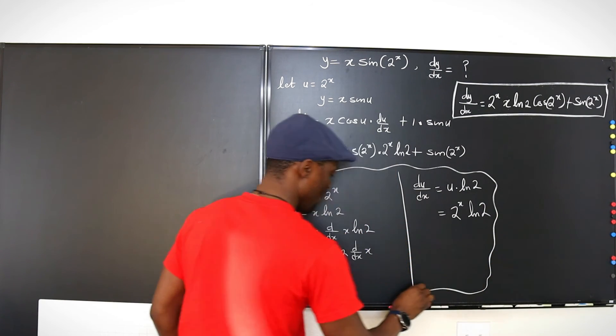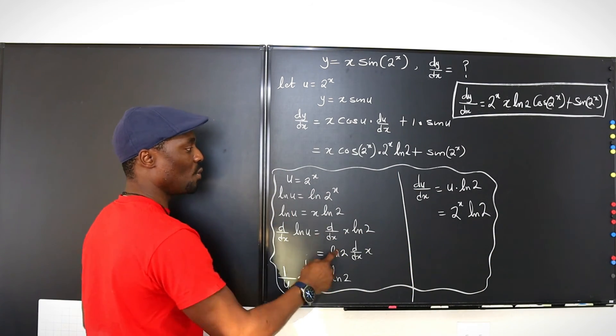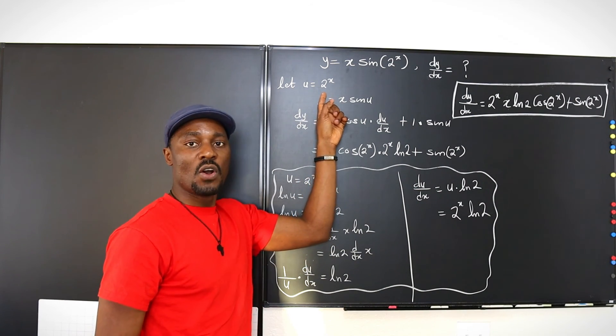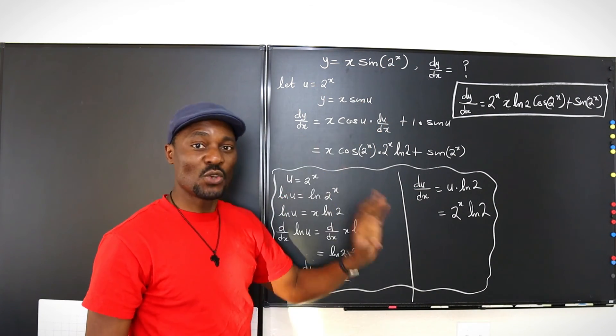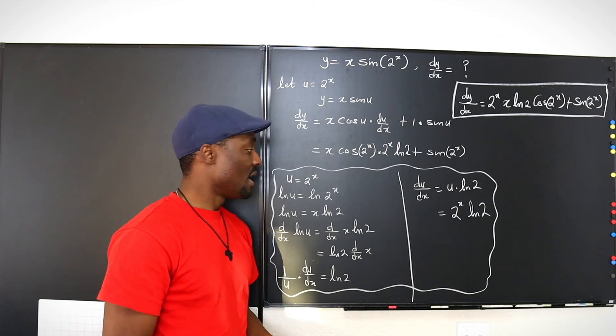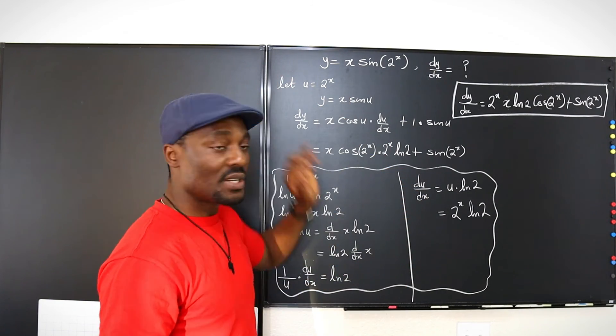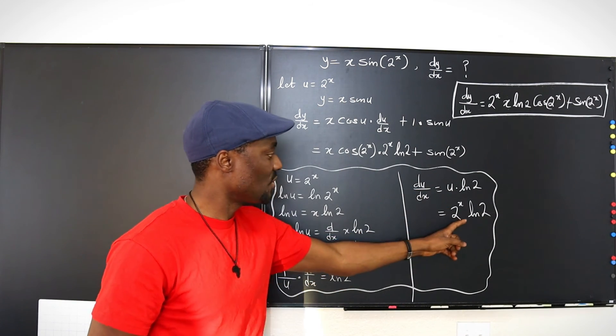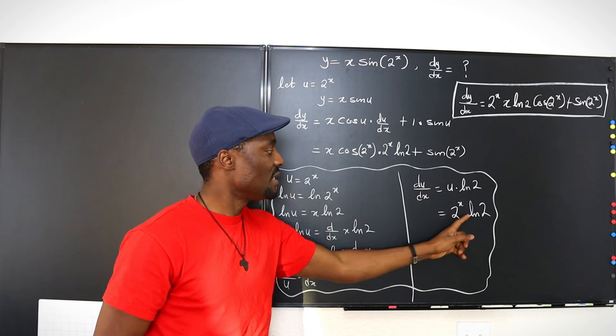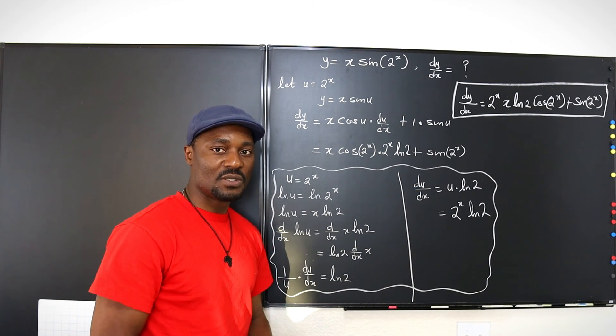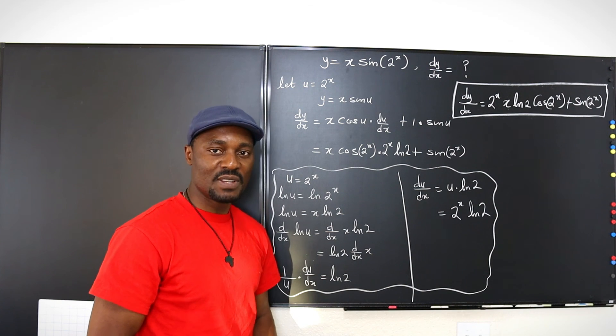So the only extra work we did, which you should, you don't have to show this work if you know how to do this, how to find the derivative of a constant to a function. It is always the natural log of the base multiplied by the function itself. The natural log of the base multiplied by the function itself, like you saw here. Natural log of the base multiplied by the function itself, and that will always be your derivative.